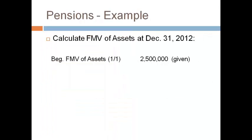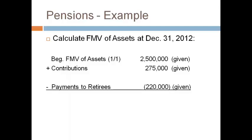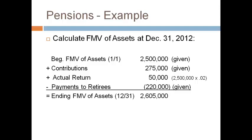The fair market value of plan assets increases with contributions and decreases with payments to retirees — these two amounts were given. Actual returns on investments during the year also impact the ending balance. The actual return is computed as the beginning fair market value of plan assets multiplied by the percent of the actual return.